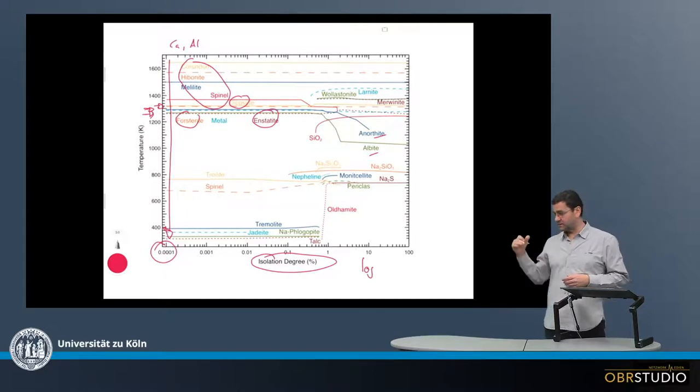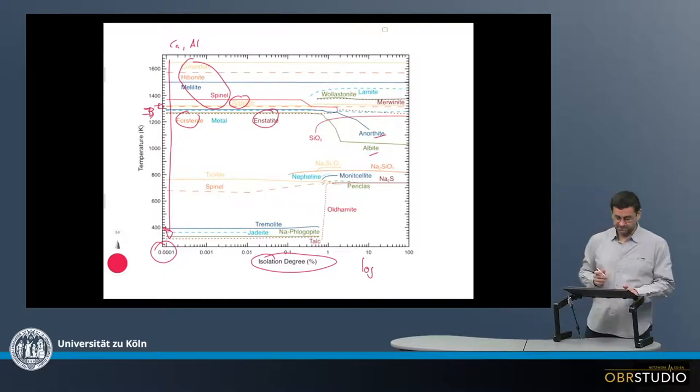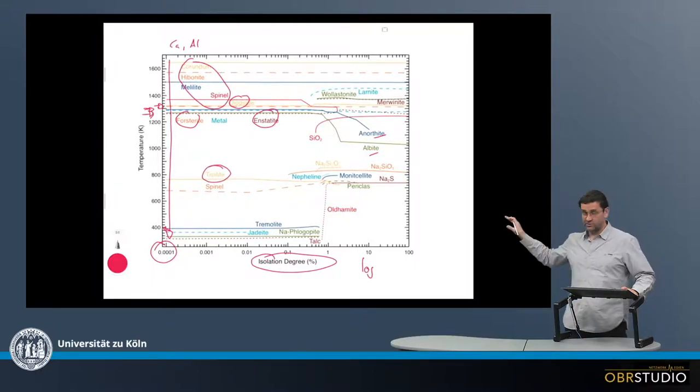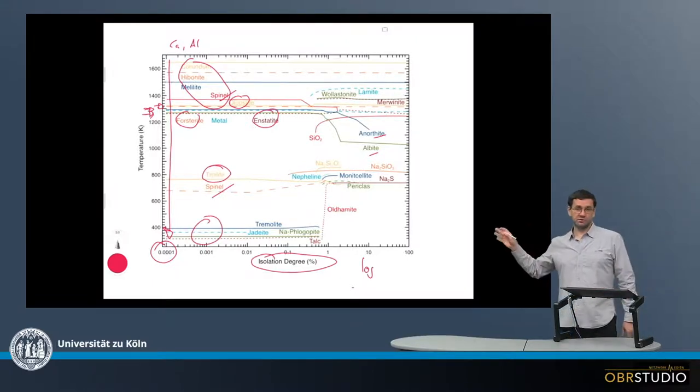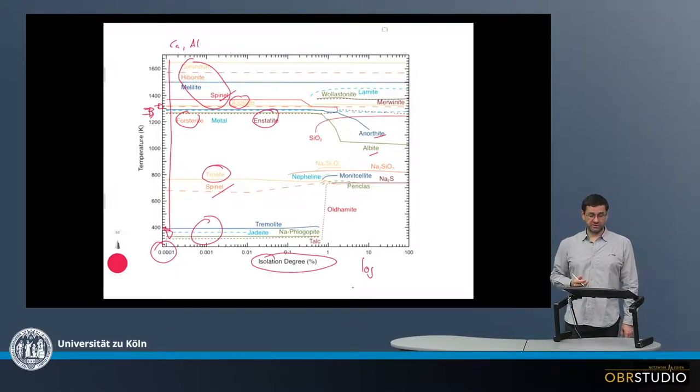So diopside, olivine, enstatite, and then the feldspars. And quite some temperature below is troilite, so sulfur-rich mineral, then this is a different spinel than this one, so one is aluminum-rich, the other is more magnesium-rich. And down here are then water-rich phases or OH-rich phases.